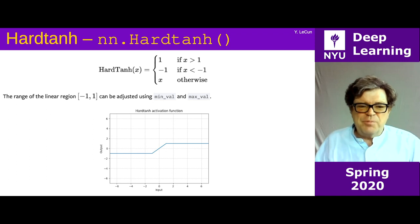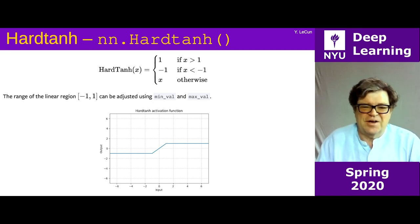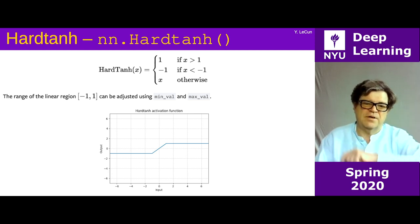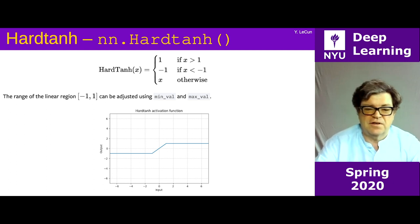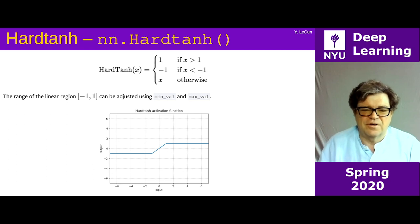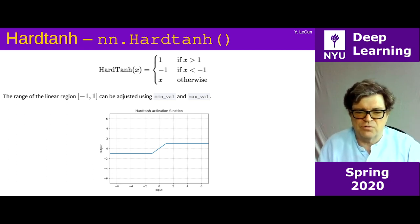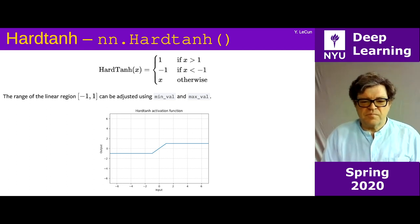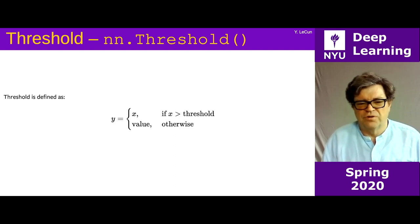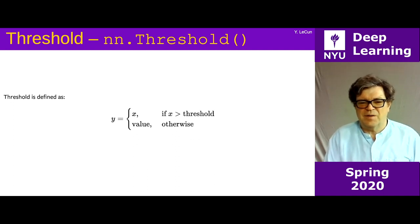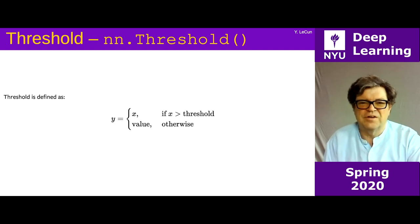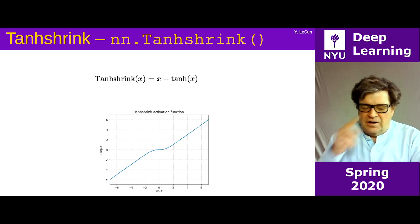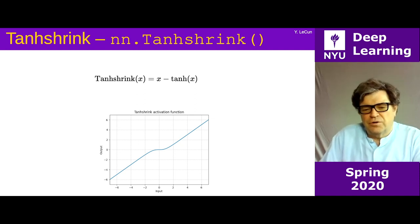Hard tanh is basically just a ramp and works surprisingly well, particularly if weights are kept within small values so units don't saturate too much. Hard threshold is very rarely used because you can't propagate gradient through it — this is actually what kept people from inventing backprop in the 1960s and 70s: they were using binary neurons and so didn't think of gradients at all.